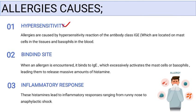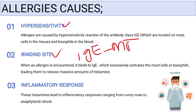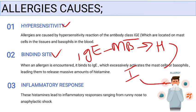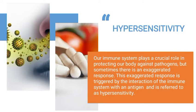Allergies are caused by hypersensitivity reactions of the antibody class IgE, which are located on the mast cells in the tissues and basophils in the blood through binding sites. When an allergen is encountered, it binds to IgE, which excessively activates the mast cells and basophils, leading them to release a massive amount of histamine through an inflammatory response. These histamines lead to inflammatory responses ranging from a running nose to anaphylactic shock.